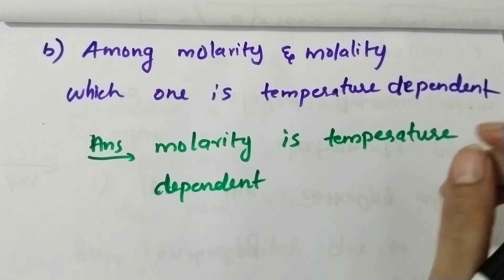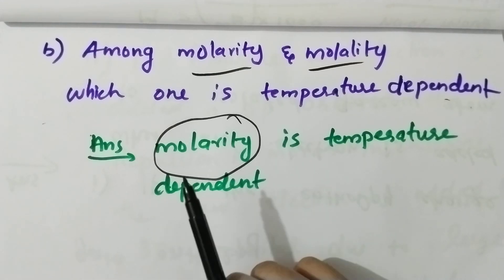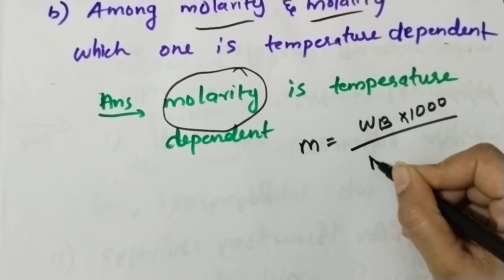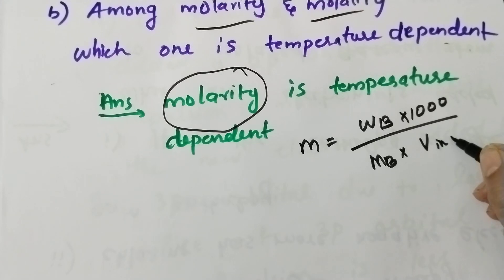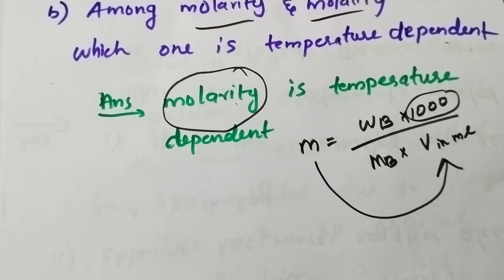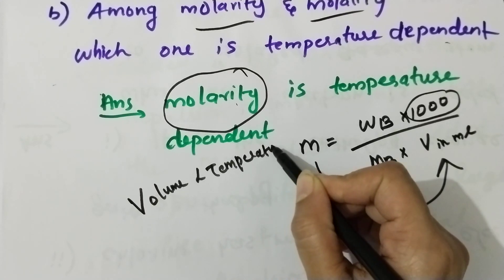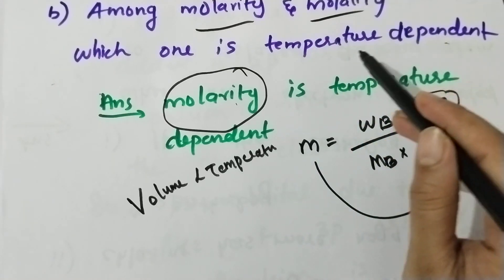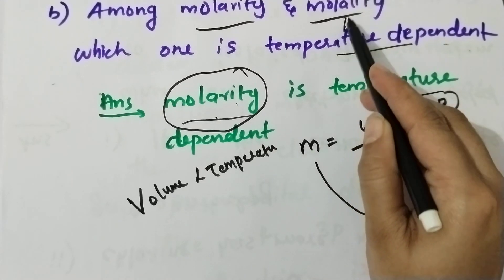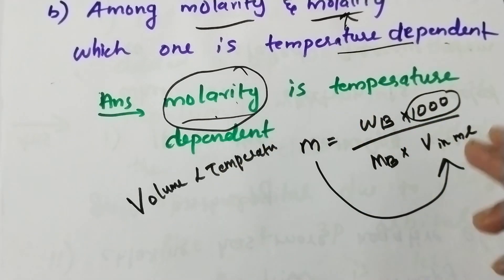The answer is molarity. Molarity is temperature dependent. The molarity equation is WB × 1000 divided by MB × volume in milliliters. Molarity depends on volume, and volume depends on temperature. Therefore, molarity is temperature dependent.